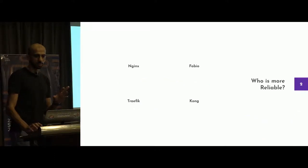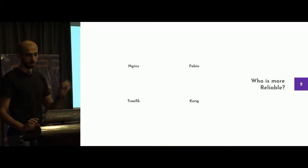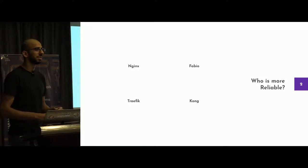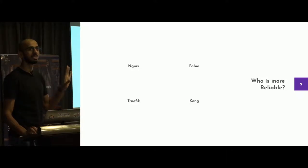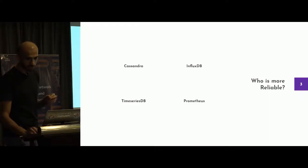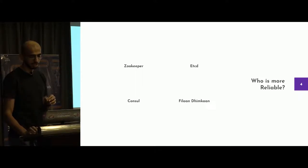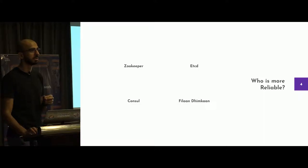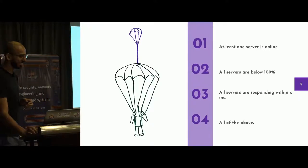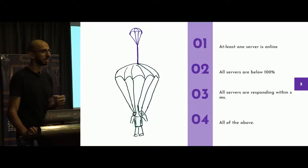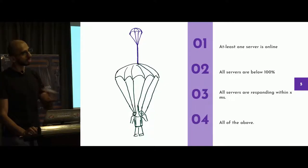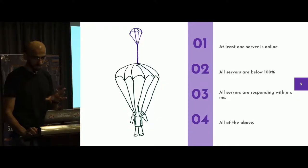A few questions. Who is more reliable among all of these — Fabio, Traffic, Kong, T-shirt? None. Which one is more reliable of the four databases? Something has to be better than the other one. Who is more reliable — Zookeeper, Consul, random, anything? How do you define reliability actually? Does it mean that at some point your server, one server is online? Does it mean that all servers are below 100%? Does it mean all servers are responding within milliseconds? Or does it mean all of the above? These are the important questions we have to ask.